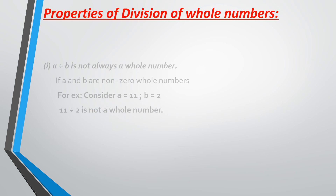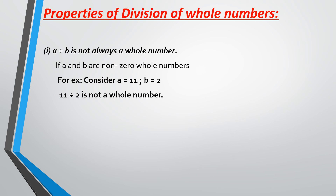Properties of division of whole numbers: the first property states that A divided by B is not always a whole number. Consider A as 11 and B as 2. When I divide 11 by 2, it does not divide equally — I get a remainder, so my answer will be in decimal. A decimal number is clearly not a whole number. So A divided by B is not always a whole number.